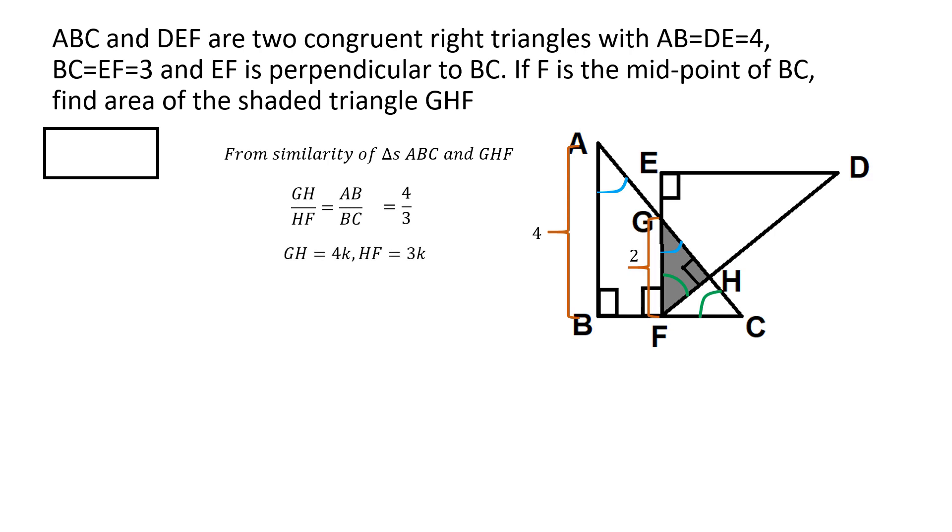So we can let GH is equal to 4K, HF equal to 3K, where K is some common parameter. And that makes the ratio GH by HF 4 by 3. So this is a valid assumption to make based on the finding that GH by HF has a ratio of 4 by 3. And this is a trick that often helps form some simple equations to solve if you approach the problem in this way. Have a common parameter K, and then basically take GH equal to 4K, HF equal to 3K.